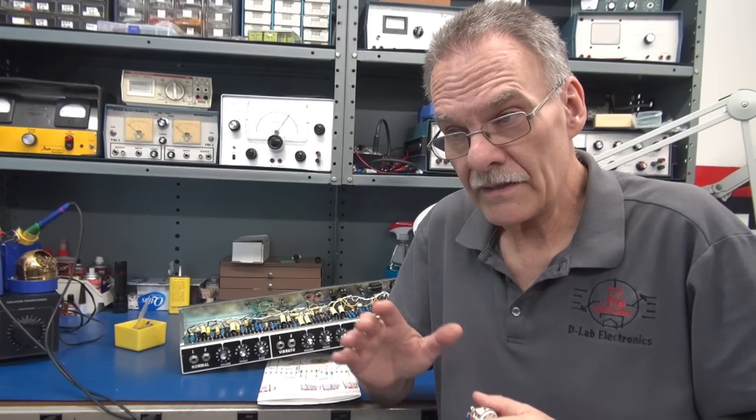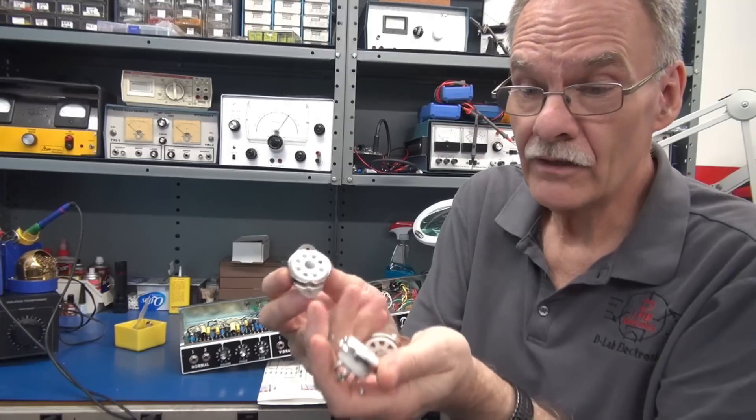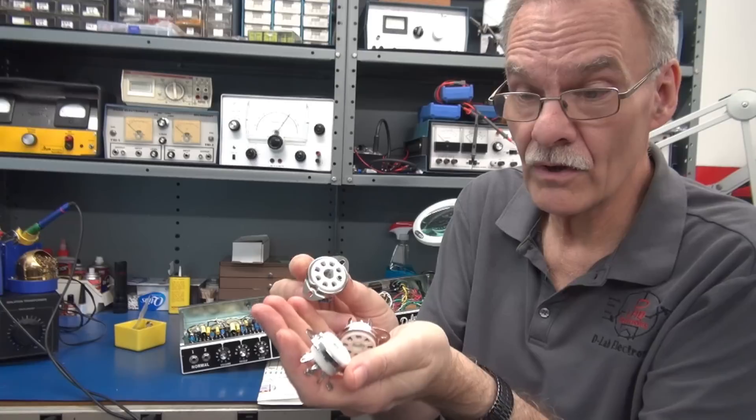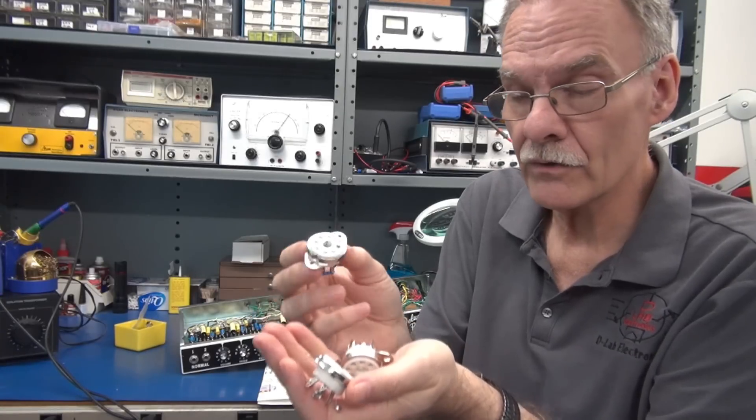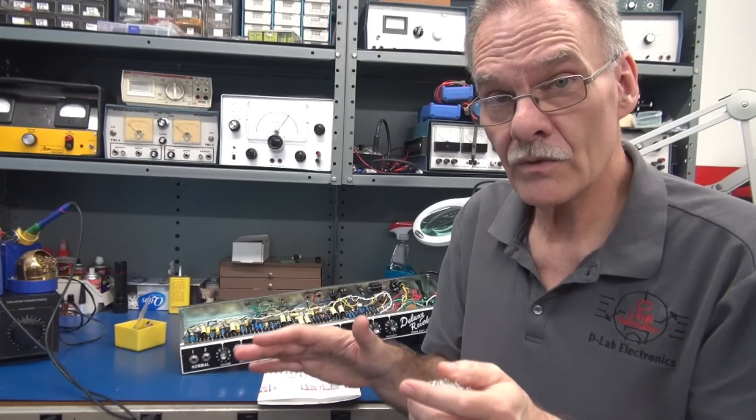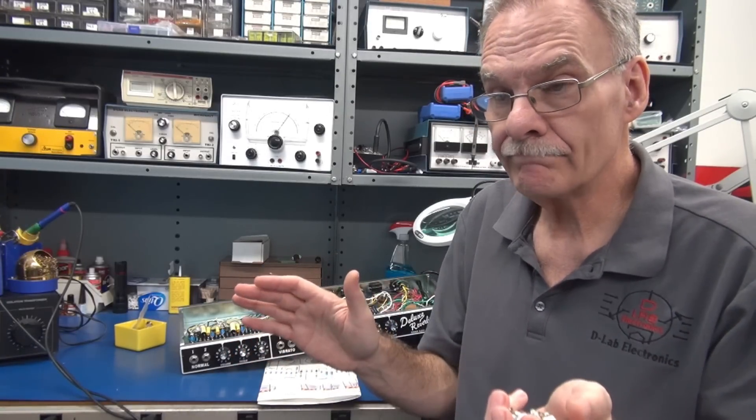So those two things were causing the main power fuse to blow. So I corrected that. And then I noticed that the output tubes were intermittent. And that was because they used these ceramic white sockets.